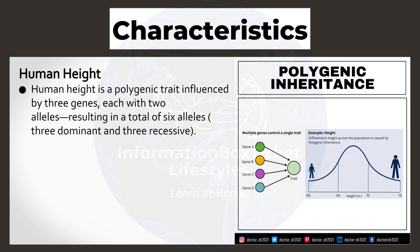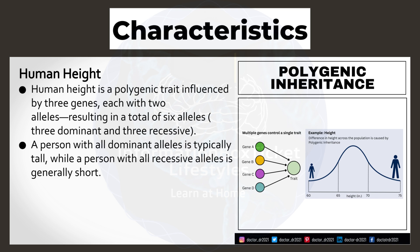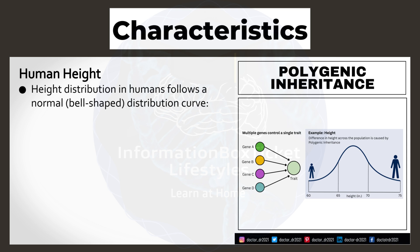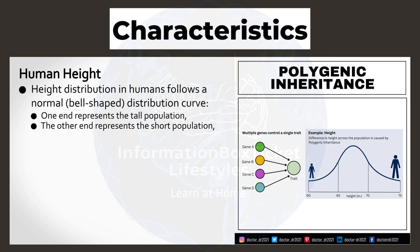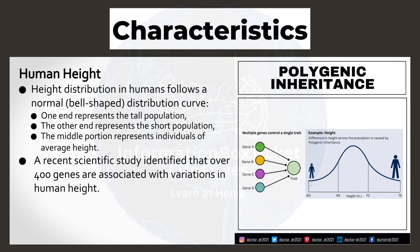Human height is a polygenic trait influenced by three genes, each with two alleles, resulting in a total of six alleles — three dominant and three recessive. A person with all dominant alleles is typically tall, while a person with all recessive alleles is generally short. Height distribution in humans follows a normal, bell-shaped distribution curve. One end represents the tall population, the other end represents the short population, and the middle portion represents individuals of average height. A recent scientific study identified that over 400 genes are associated with variations in human height.